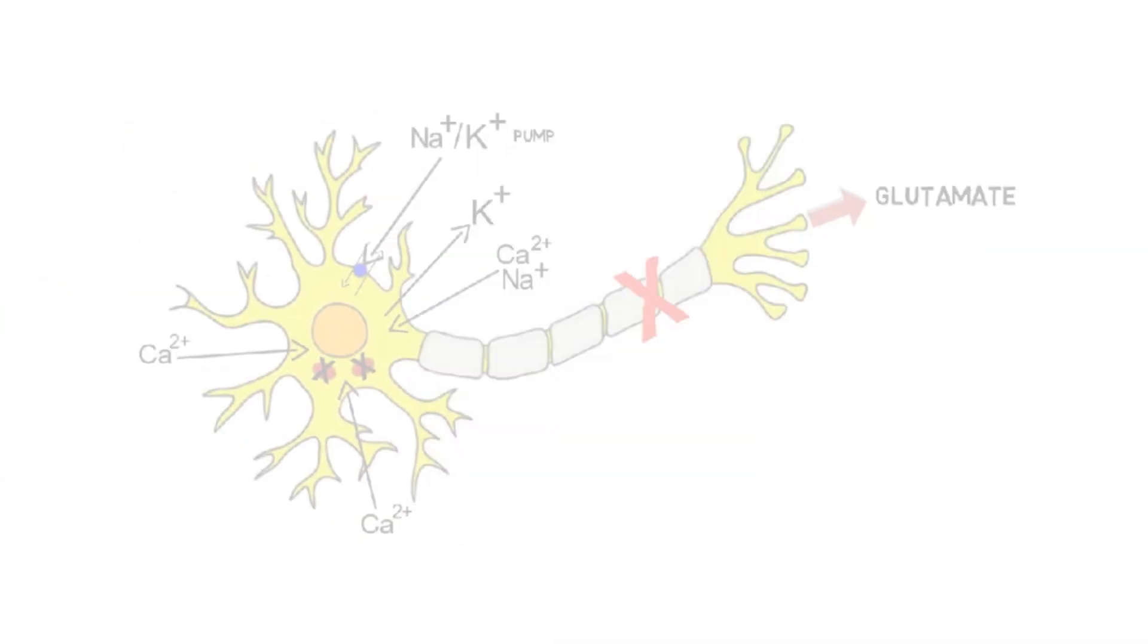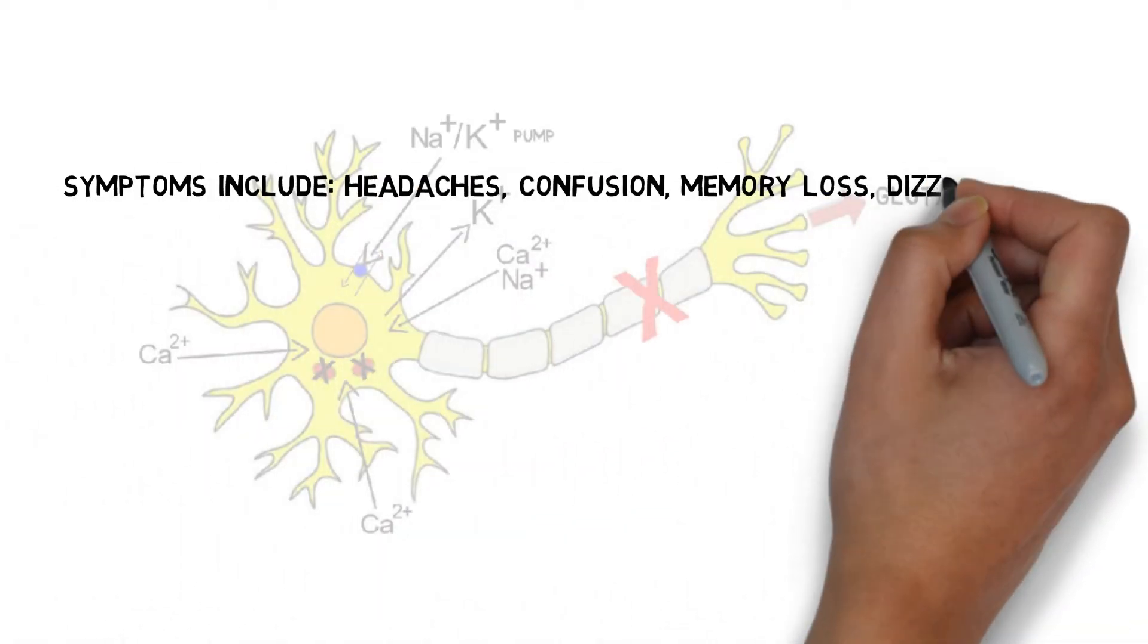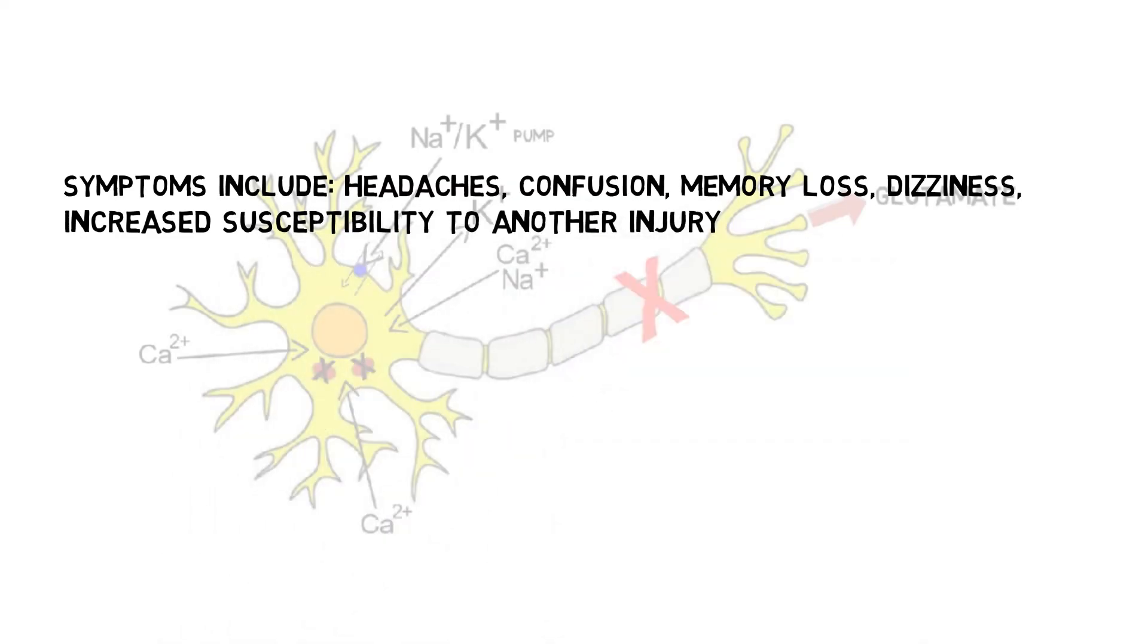These structural and biochemical changes are associated with the symptoms of a concussion, which include but aren't limited to headaches, confusion, memory loss, and dizziness.